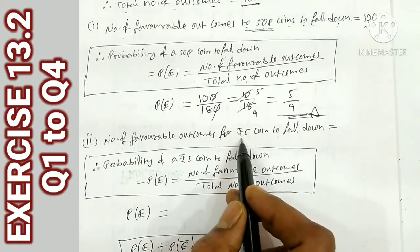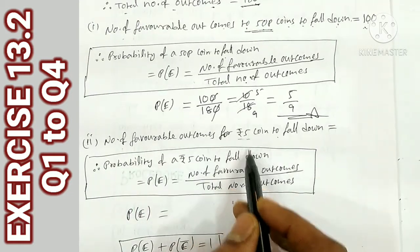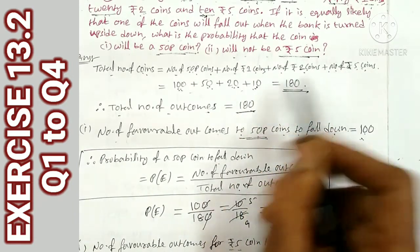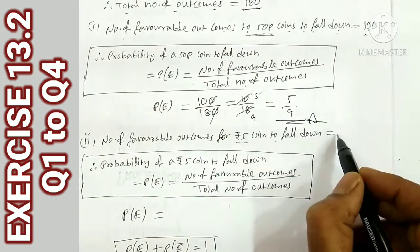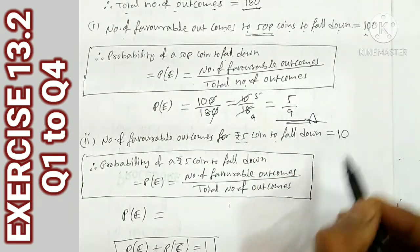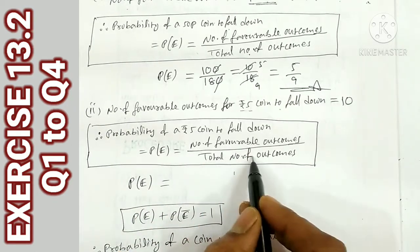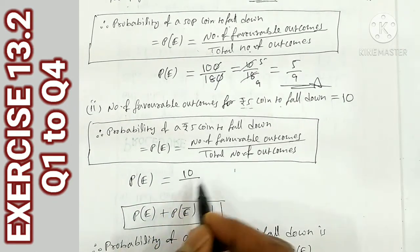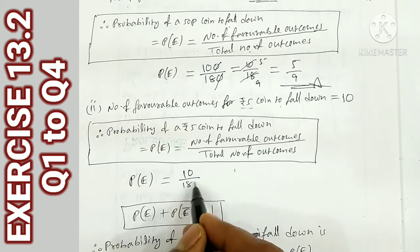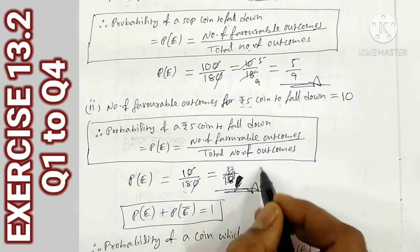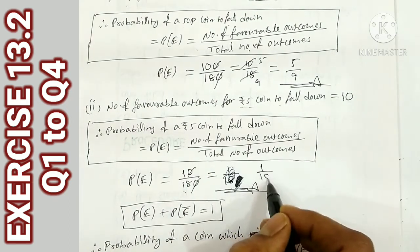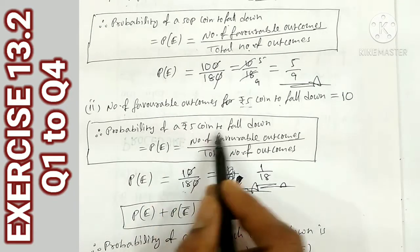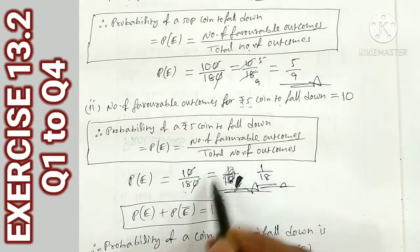Number of favorable outcomes for a 5 rupees coin: the 5 rupee coins are 10. Using the same formula: P(5 rupees) = 10 / 180. Cancel the zeros: 1/18. That is the probability of getting the 5 rupees coin.